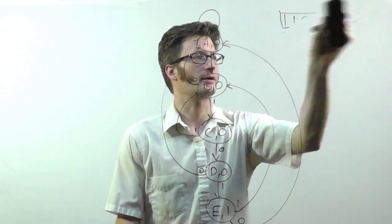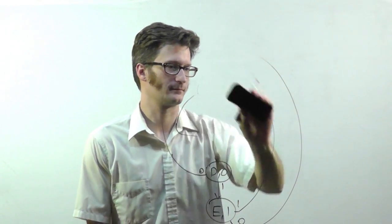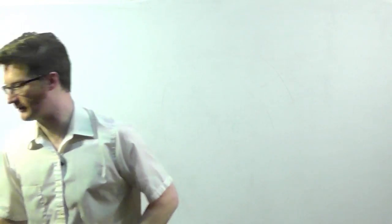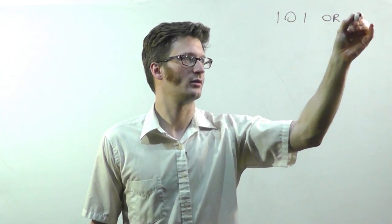Let's look at one more example here. This is going to be a state machine that detects two different sequences. So we'll be looking for 1, 0, 1 or 1, 1.